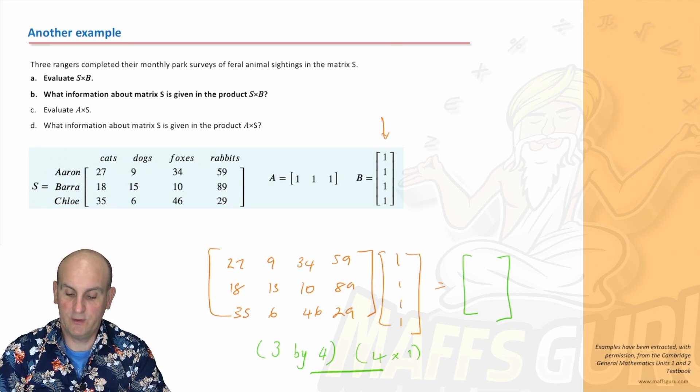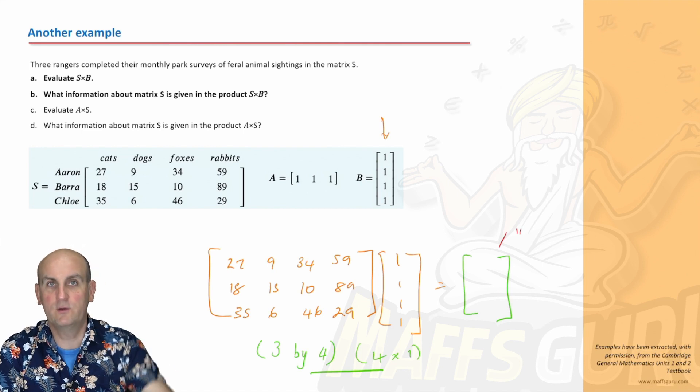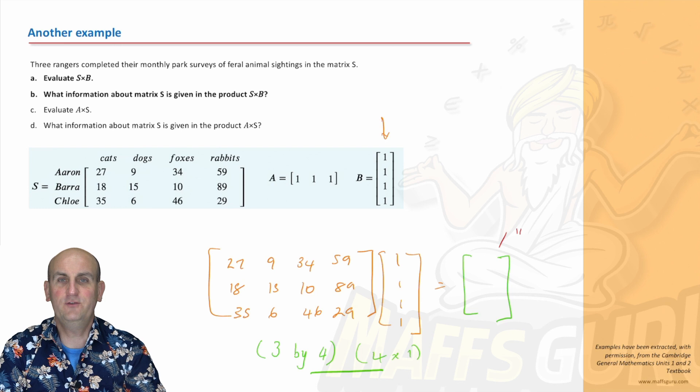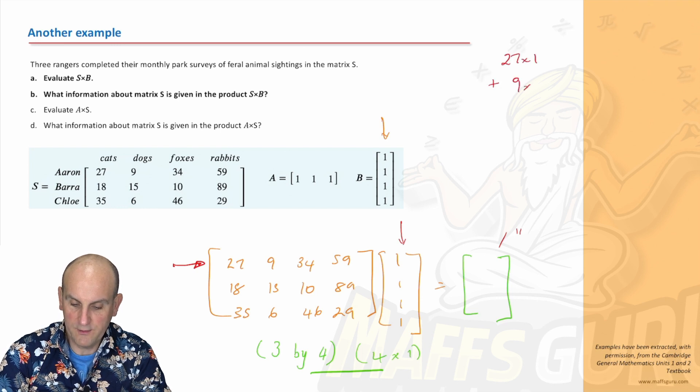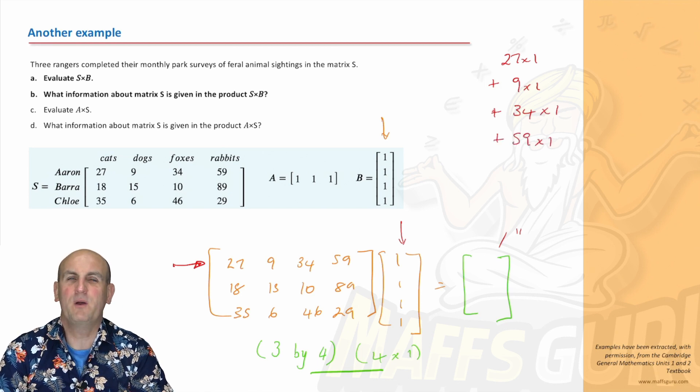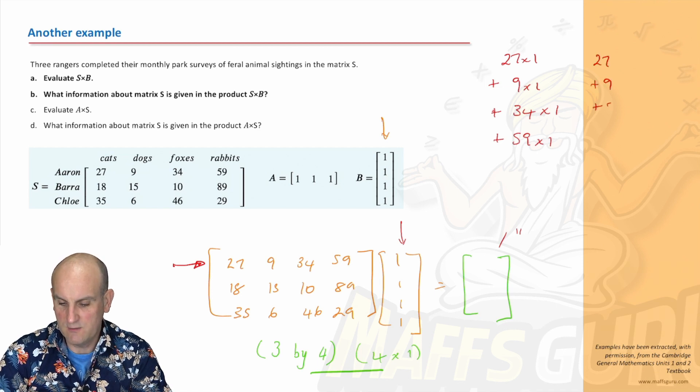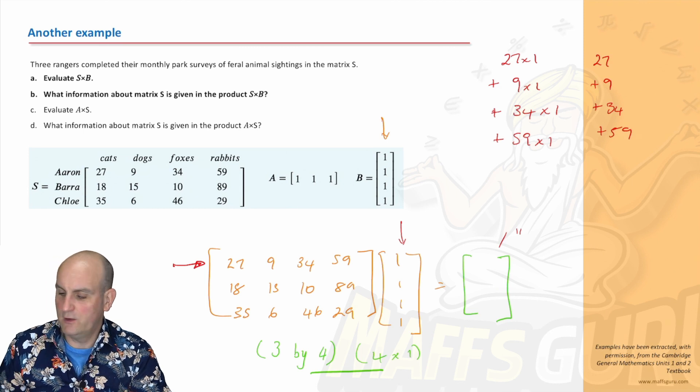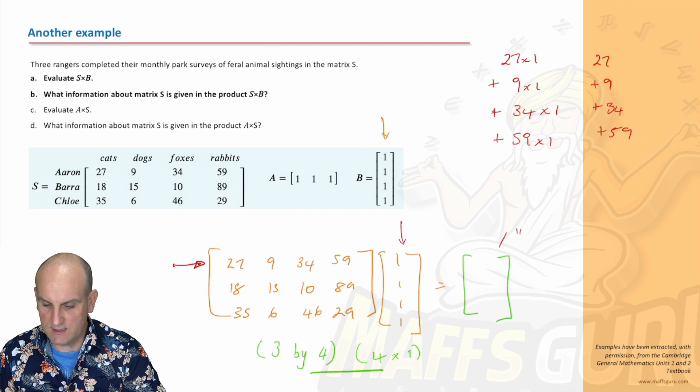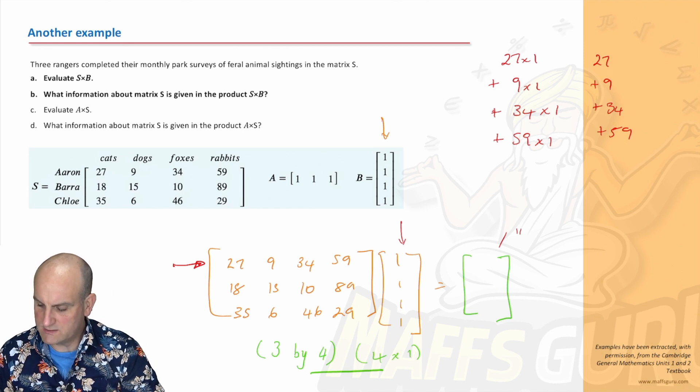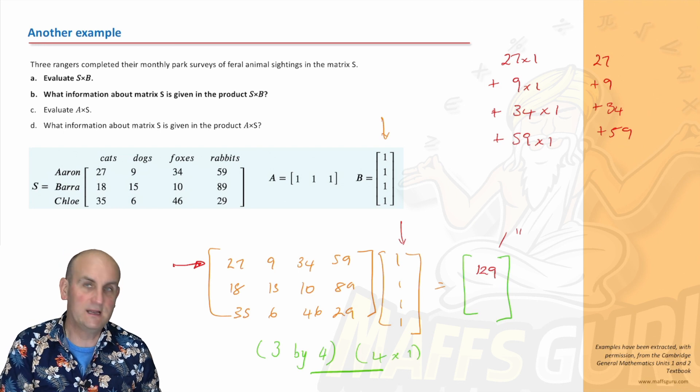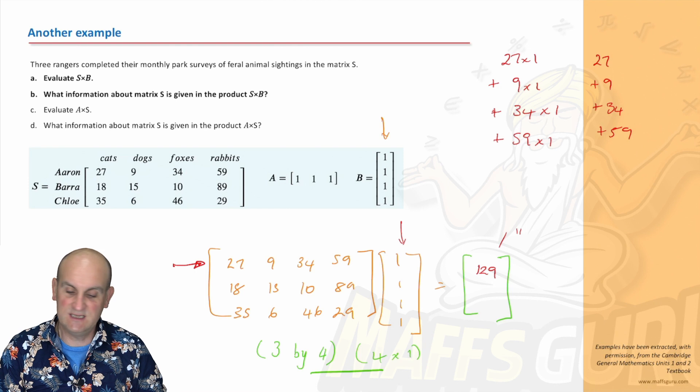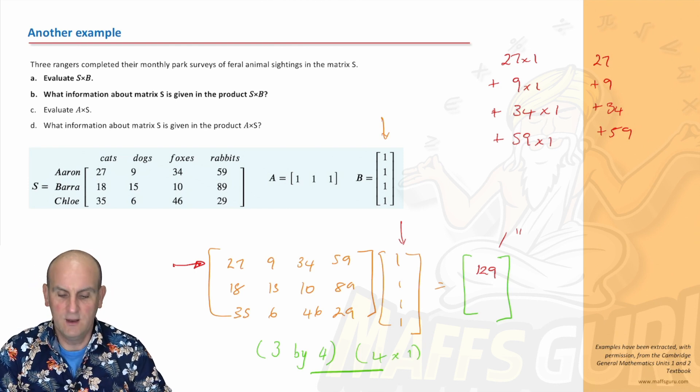Let's do our multiplication. This one here is going to be address 1,1, the first row by the first column. We're going to get 27 times 1 plus 9 times 1 plus 34 times 1 plus 59 times 1. Well, multiply a number by 1 and it stays the same. So we're going to get 27 plus 9 plus 34 plus 59, which gives me the grand total of 129.